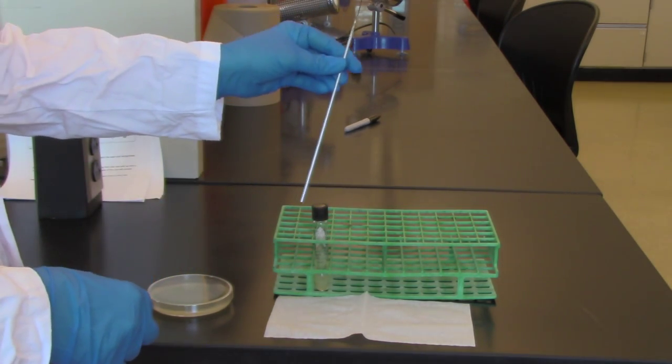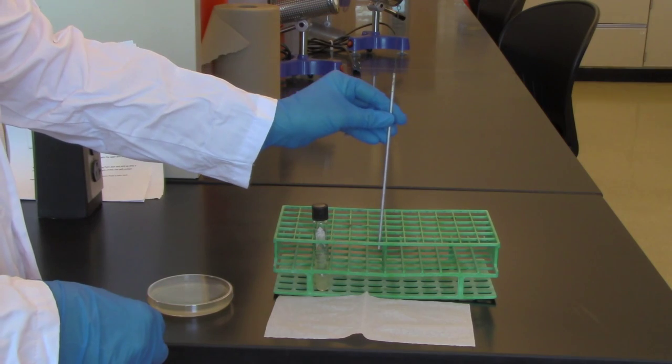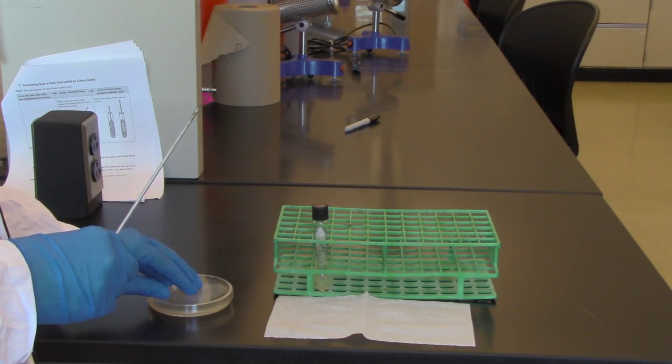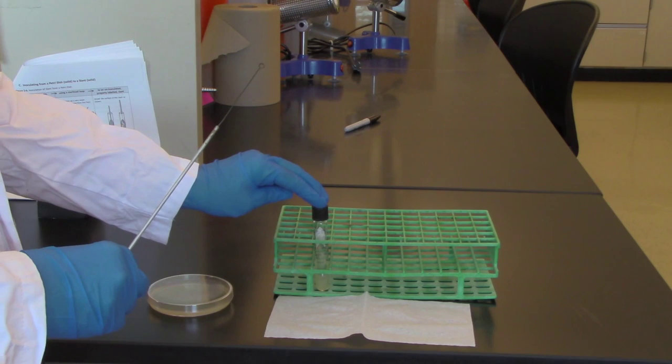Then I will sterilize my inoculating loop. And that is how you go from a culture on a petri dish and inoculate a slant.